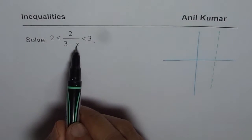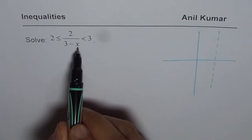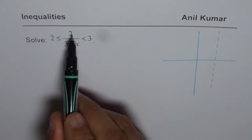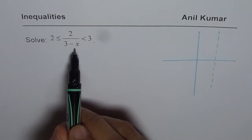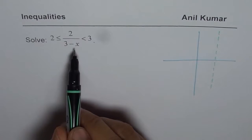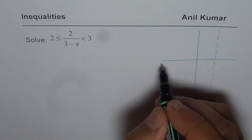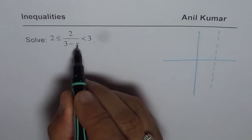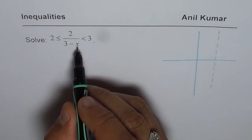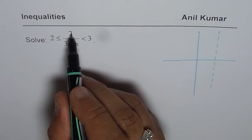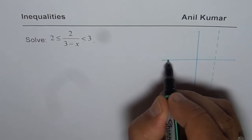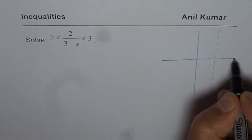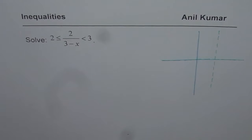If x is very large, the value of 2/(3−x) is going to be 0. You can test it: if x = 1000, then 2/1000 is essentially 0. So the x-axis becomes the horizontal asymptote in this case.